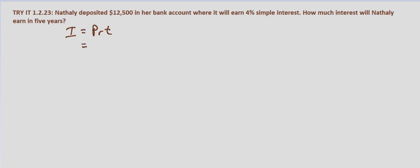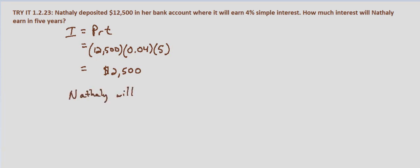In this case we're looking for I, so we simply substitute what we're given: P is twelve thousand five hundred, R is four percent — don't forget to convert that to a decimal — and T is five years. If we multiply all that through, we end up getting two thousand five hundred dollars. So Nathalie will earn two thousand five hundred dollars in interest in five years.